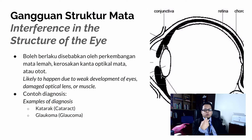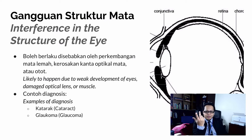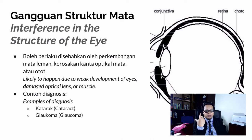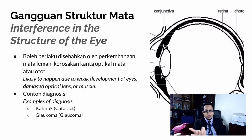Next, interference in the structure of the eye. This kind of disability is likely to happen due to weak development of the eye — such as a damaged optic lens or muscle. Examples of this disability include cataract and glaucoma.